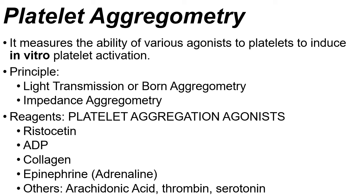We will begin with platelet aggregometry, which measures the ability to initiate platelet aggregation in vitro — meaning outside the human body. The principles of instrumentation used for this parameter are: number one, light transmission, also known as Born aggregometry.